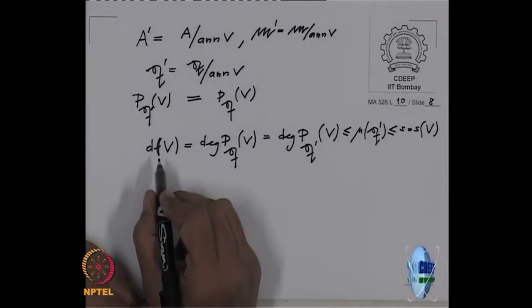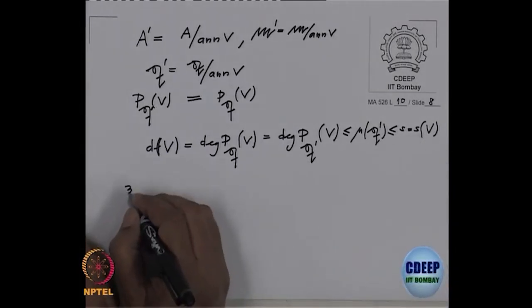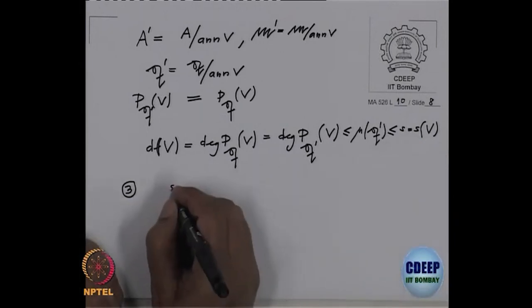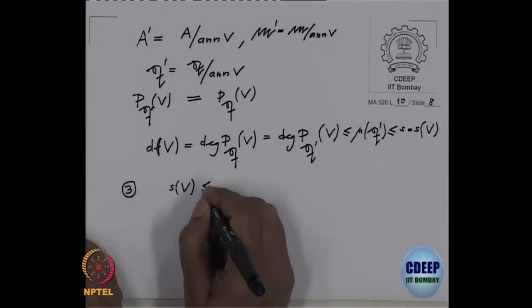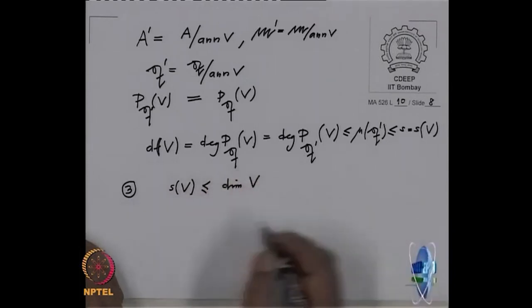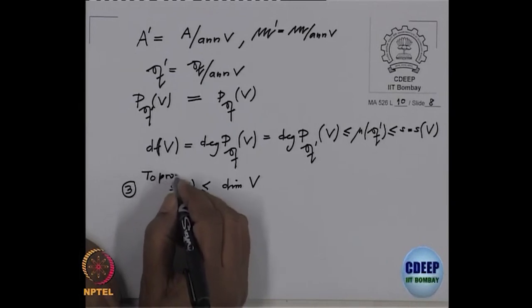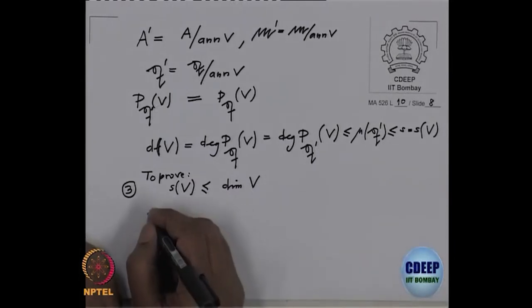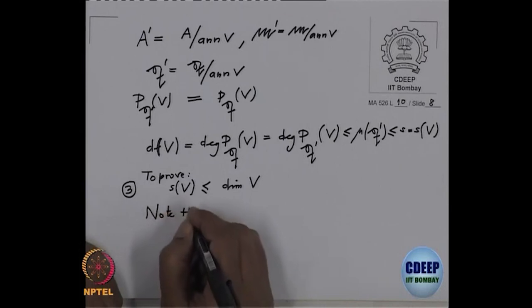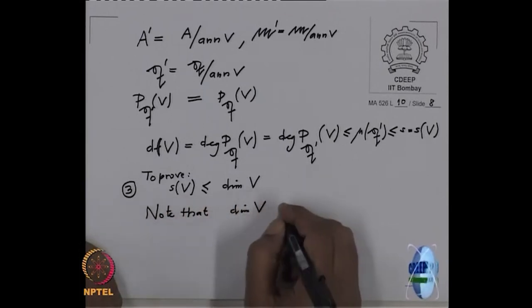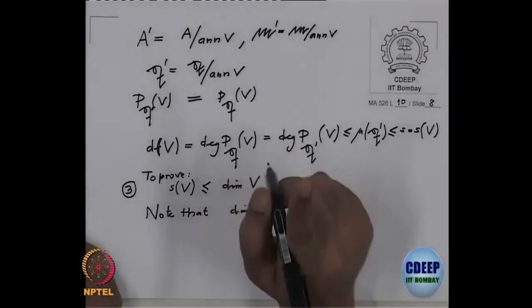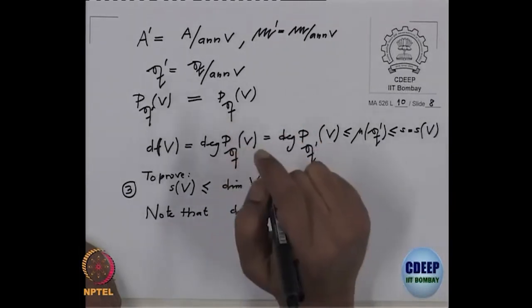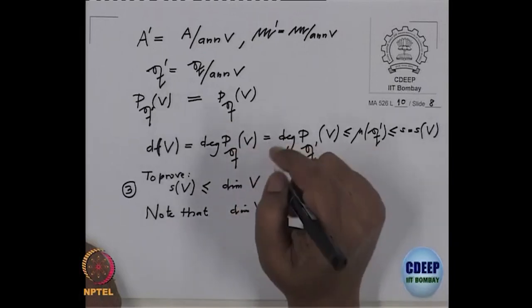The second inequality was D of V is less than or equal to S of V. The third and last inequality we want to prove is that S of V is less than or equal to the dimension of V — easy to prove. First note that the dimension of V is finite, because we proved inequality one: dimension of V is less than or equal to the degree of the Hilbert-Samuel polynomial, and the degree is a finite integer.